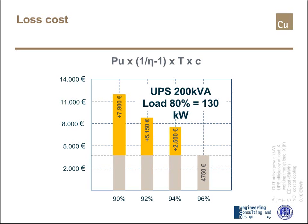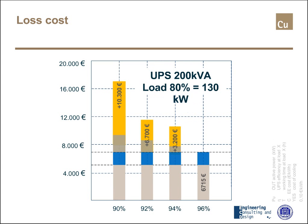This calculation did not include the cost of energy for the cooling system. As losses increase, cooling requirements increase, and cooling is usually performed with electrical equipment. If the COP of the cooling system is approximately 3, we must add about 30% to this cost. UPSs work 24 hours a day, seven days a week, so efficiency is a very important issue to consider when specifying them.